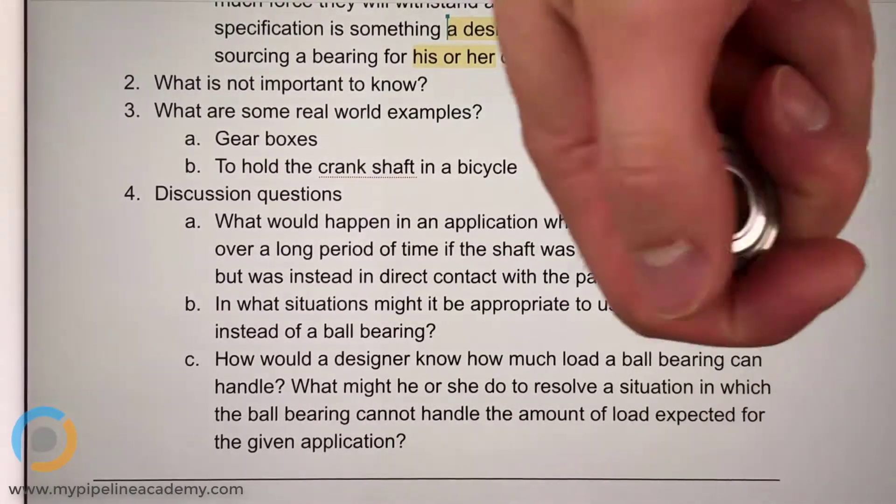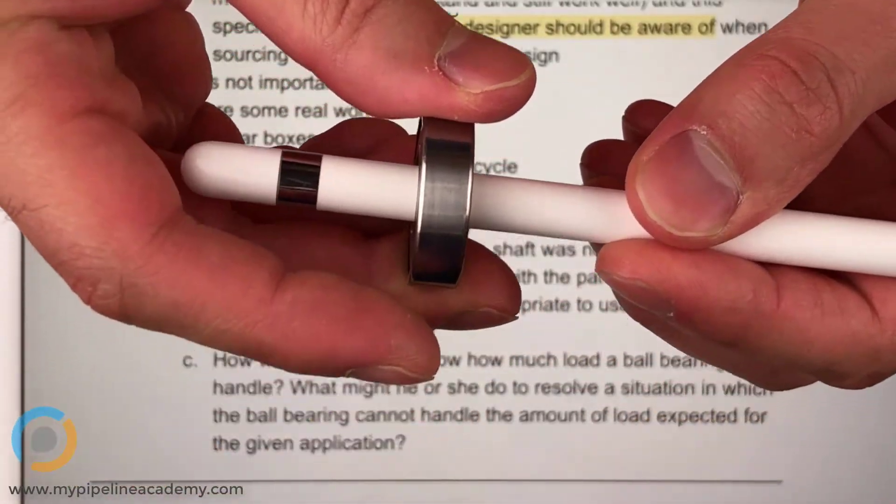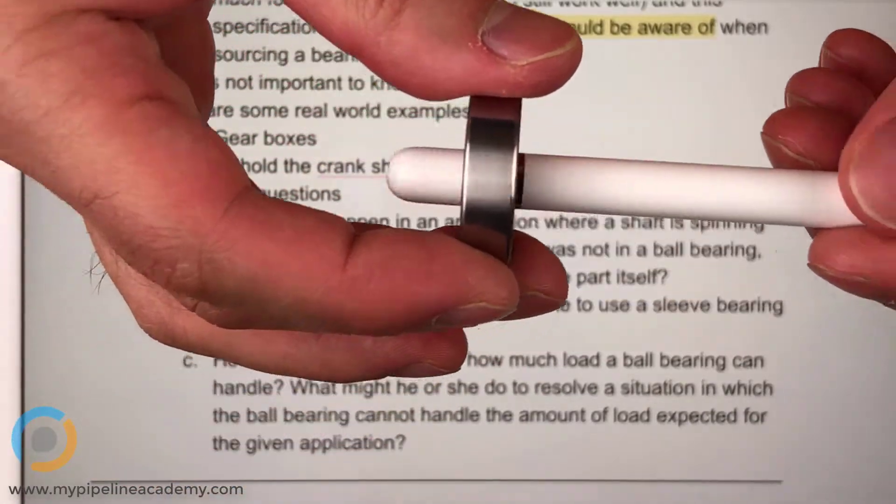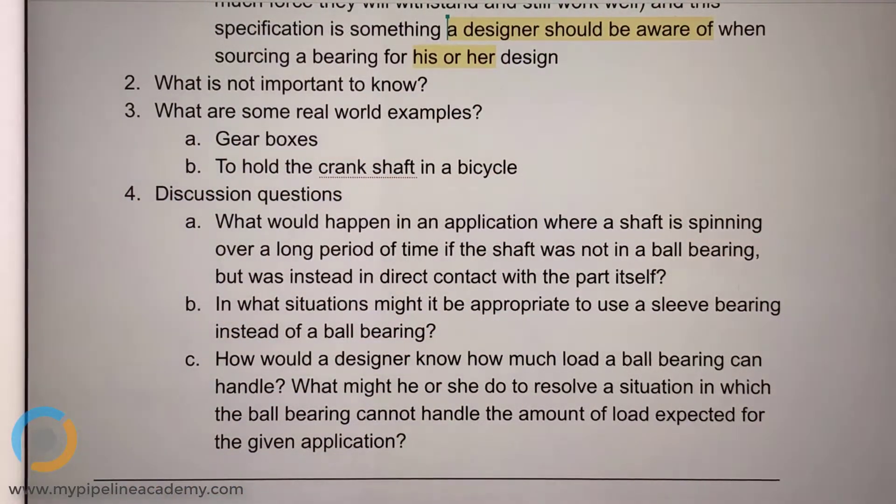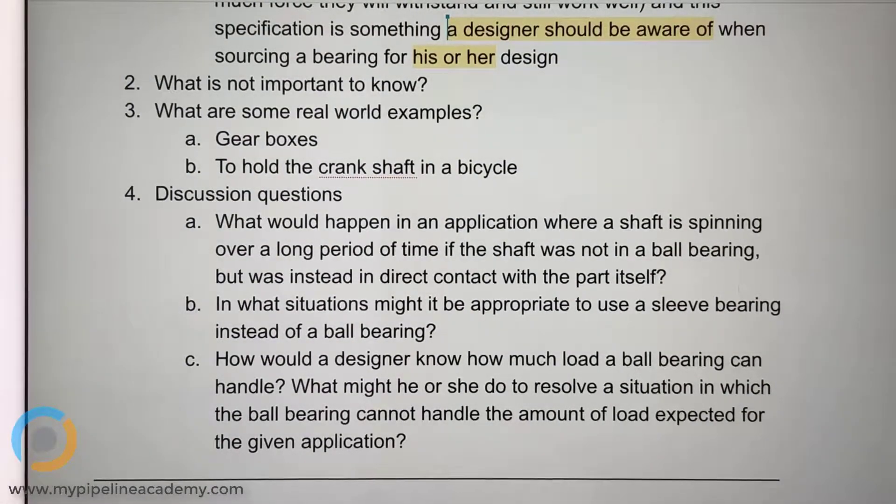But my question before we do that is how will we know as mechanical designers that there are going to be 20 pounds of load? How do we know? Does SolidWorks tell us? No, that's like a design input. That would be a design input. So the customer comes to you and says, we need to hang a 20 pound mass off of a shaft that is spinning at a hundred RPM. So that might be a design input that your customer gives to you. And then it's your job to take those design inputs and find hardware that will support them. Got it.